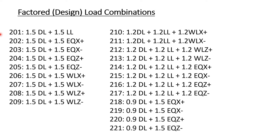The numbering of the factored load combinations starts from 201 and ends at 221. You can use any numbering of your choice. I have chosen numbers so you can differentiate between unfactored and factored combinations — unfactored combinations are numbered from 101 to 117, and factored load combinations start from 201. Let's add all these load combinations in StatPro.